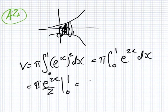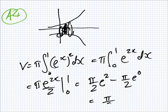That's e to the 2x times pi over 2, from 0 to 1, which would be pi over 2, e power 2, minus pi over 2, e power 0, which would be pi over 2, e squared minus 1.